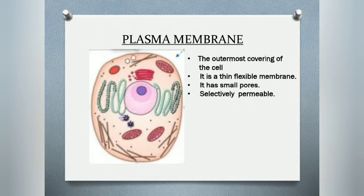Certain important molecules like carbon dioxide, water, oxygen, and ions — substances which are required by the cell — are allowed to pass through. The cell membrane decides who can enter and who can leave the cell.